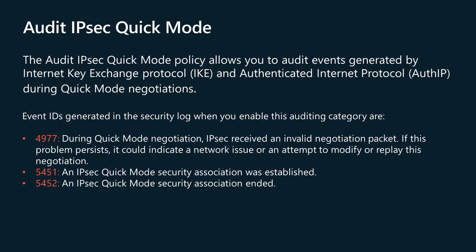The Audit IPsec Quick Mode policy allows you to audit events generated by Internet Key Exchange Protocol (IKE) and Authenticated Internet Protocol during quick mode negotiations. This policy is useful for diagnosing problems if you are troubleshooting IPsec if other avenues don't work. Event IDs generated in the security log when you enable this auditing category are displayed on the screen. More detail is available in the article linked below.